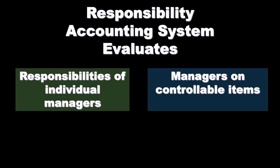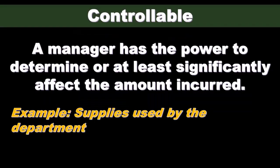Those items being the controllable items. So we're going to assign what is going to be a controllable cost versus an uncontrollable cost by the responsibility units, by the managers that are in charge of those units, those segments, those divisions of the organization. A controllable cost is one a manager has the power to determine or at least significantly affect the amount incurred — those costs where management has control over them.